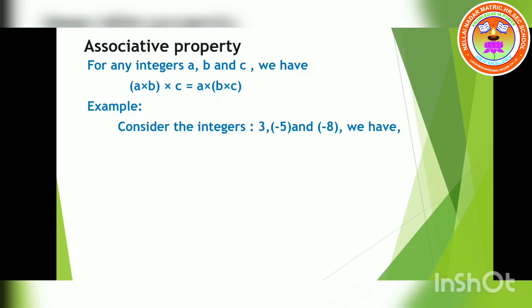Consider the integers 3, minus 5 and minus 8, where a = 3, b = minus 5, c = minus 8. Taking the LHS: first multiply numbers inside the bracket — 3 into minus 5 gives minus 15. Then minus 15 into minus 8: 15 eights are 120, and minus into minus becomes plus. So LHS gives plus 120.